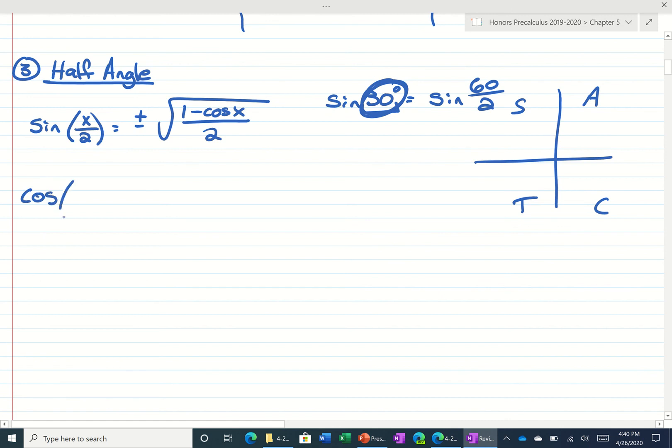For the cosine of a half angle, it's going to be plus or minus the square root of 1 plus the cosine of x divided by 2.